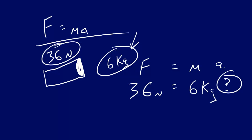So in order to get a alone or acceleration, you divide both sides by six, by six, and you come up with the answer of six meters per second squared.